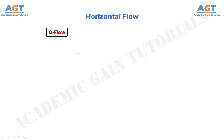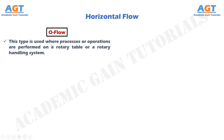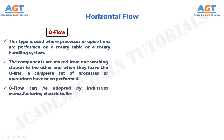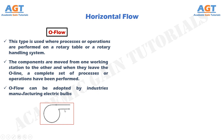Number 5: O flow. This type of material flow pattern is used where processes or operations are performed on a rotary table or a rotary handling system. The components are moved from one working station to the other, and when they leave the O line, a complete set of processes or operations have been performed. The components are inspected before they are moved on to a second line for an additional series of processes or operations, or to an assembly line. O flow can be adopted by industries manufacturing electric bulbs. This figure demonstrates O flow.